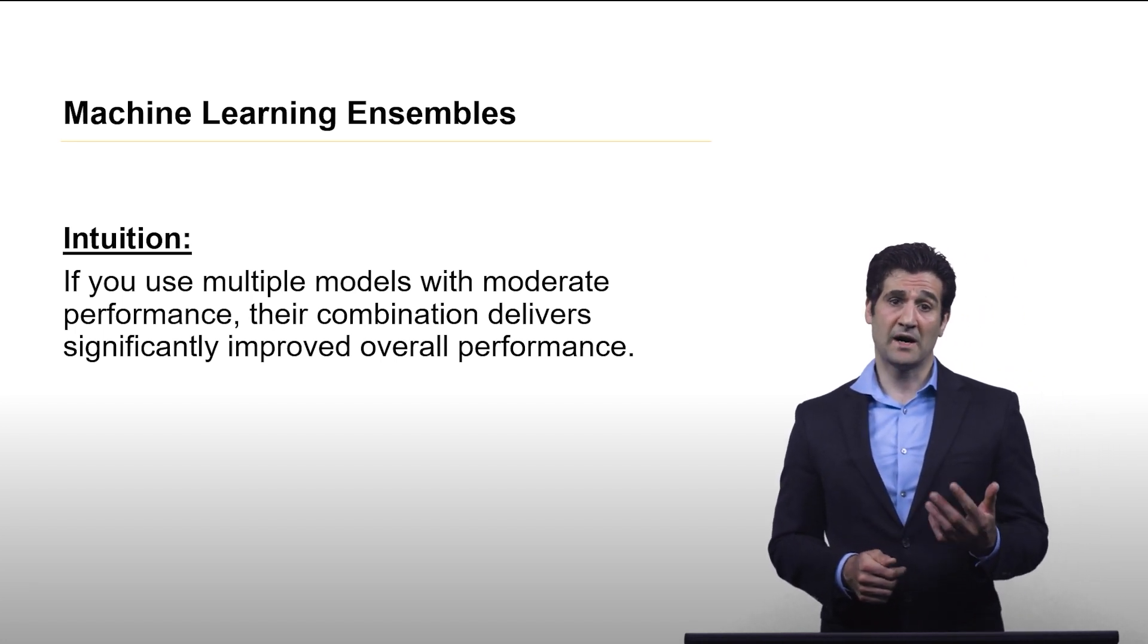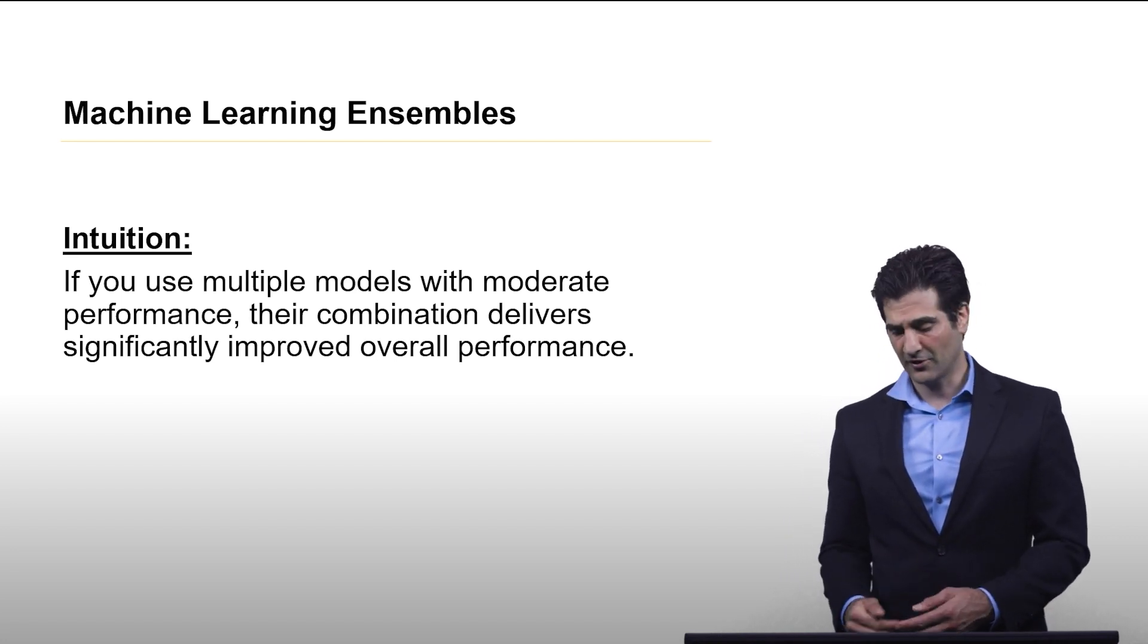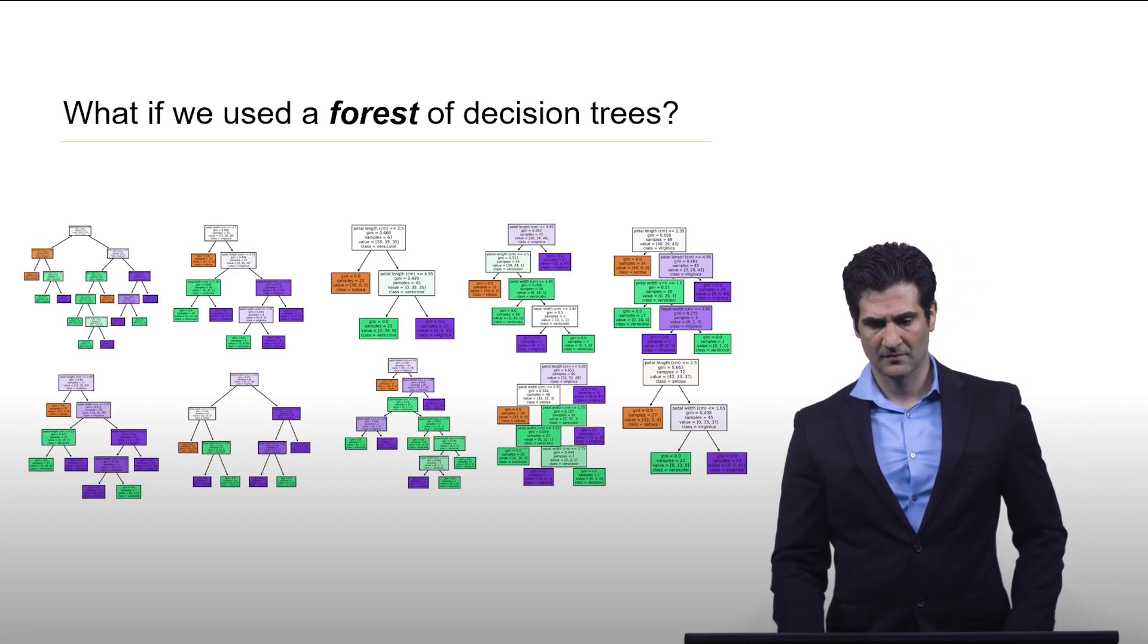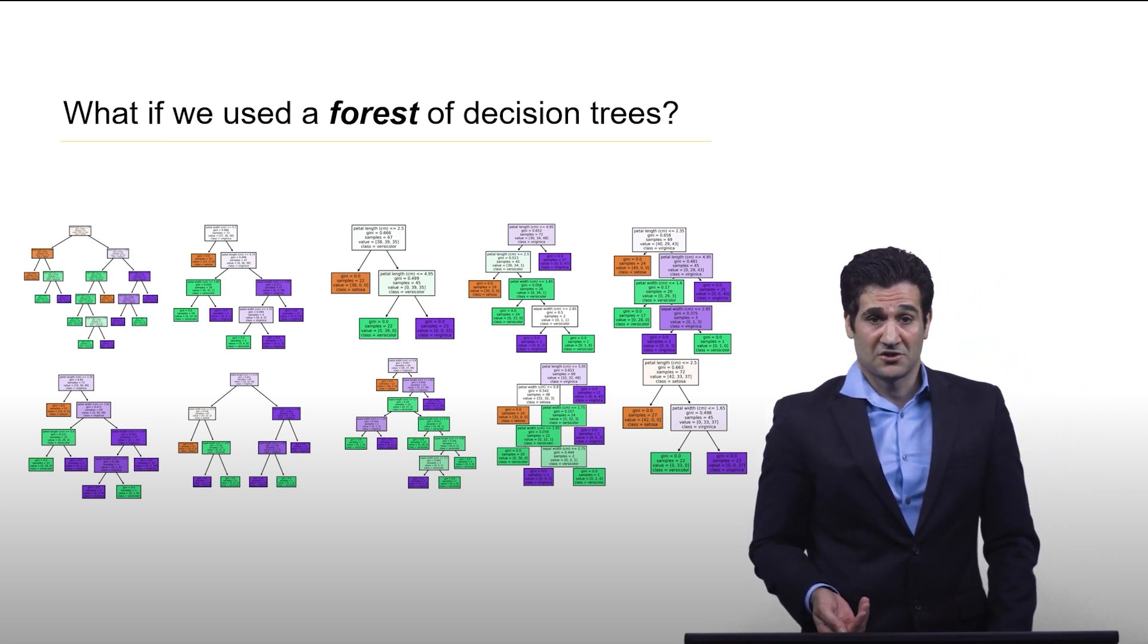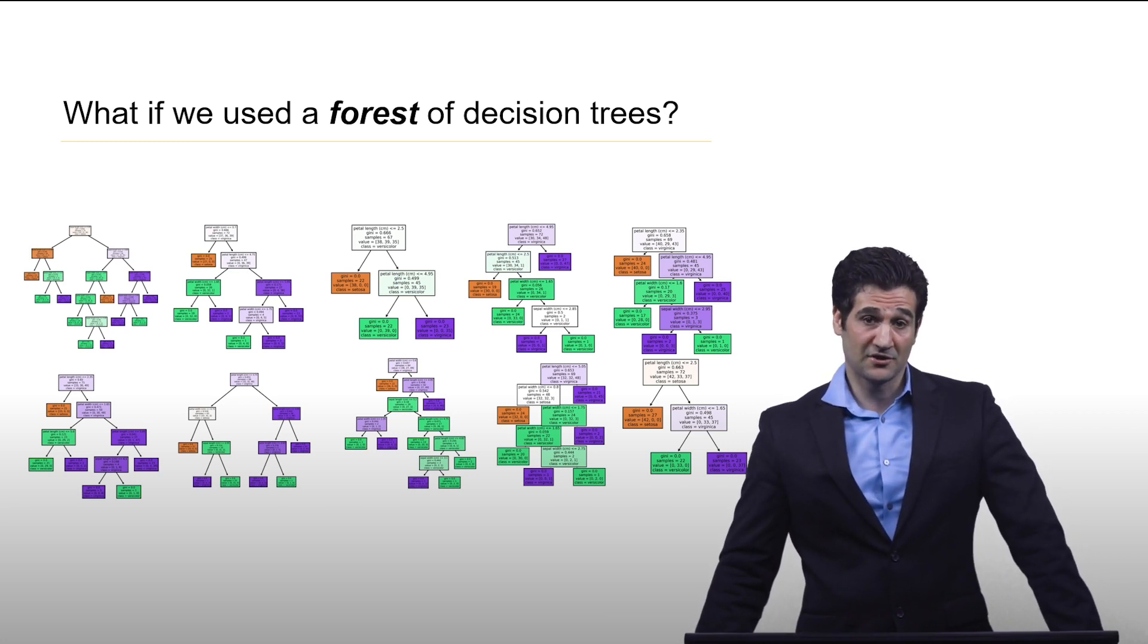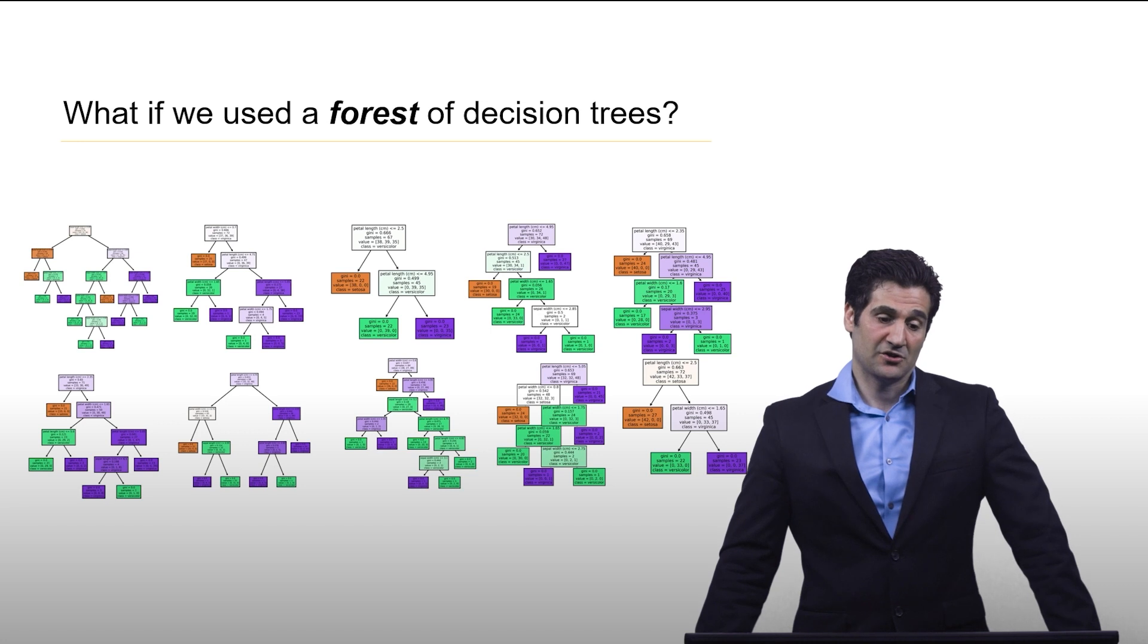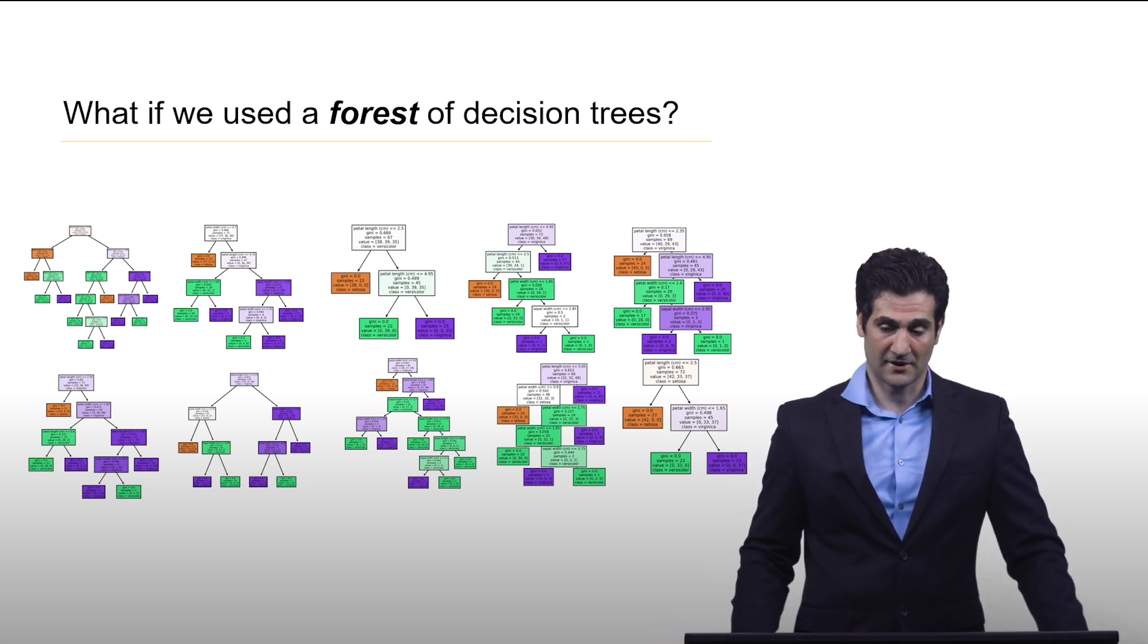Perhaps one of the most popular methods of ensemble learning today is the random forest. When we use the word forest, we're talking about a forest of decision trees. Here is an example random forest that I trained using the iris flower data set that we've been discussing throughout this course.